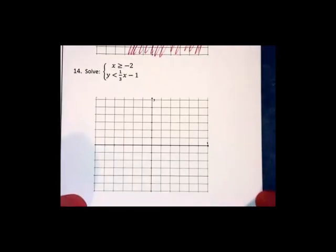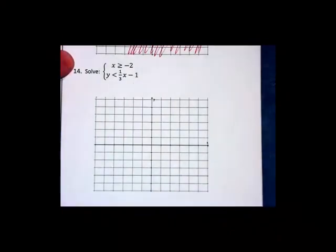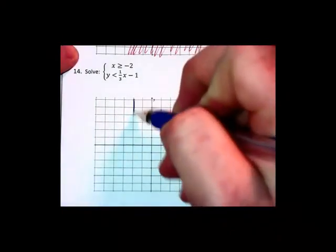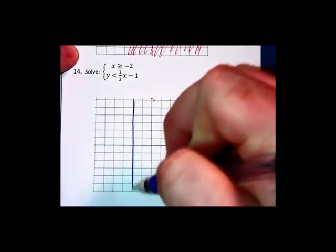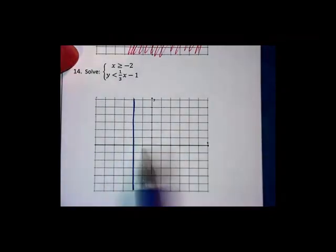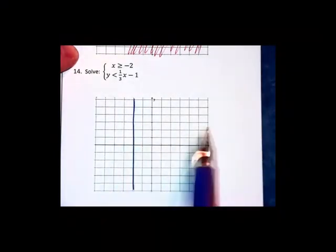Moving along here to number 14. We have x greater than or equal to negative 2. Well, x equals negative 2 is a vertical line. Greater than or equal to has a shading to the right. So I'll just remember to the right.